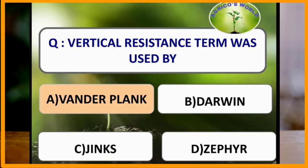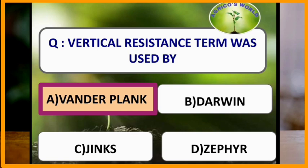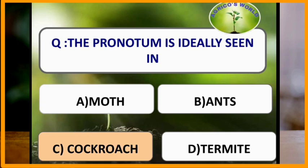Vertical resistance term was used by the scientist Van der Plank. Vertical resistance is also called major gene resistance. The resistance is specific and is controlled by monogenic or oligogenic major genes. The pronotum is ideally seen in cockroach.